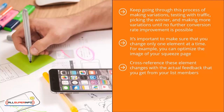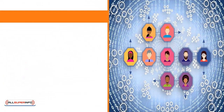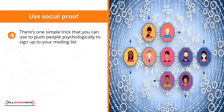Continue moving from one element at a time until the squeeze page converts at a fairly high and predictable rate. Cross-reference your element changes with the actual feedback you get from your list members. Using these two pieces of data together, you should be able to come up with a statistics-driven modification strategy. Otherwise, you're just taking your list members' words at face value, and it's anybody's guess whether their suggestions will actually improve your squeeze page's conversion rate.